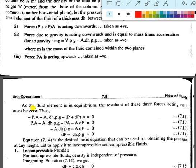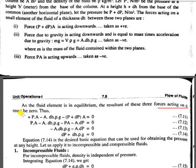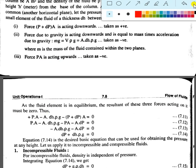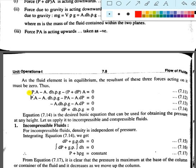As per the fluid element in equilibrium, the resultant of these three forces must equal zero. So: PA minus A·dH·rho·g minus (P plus dP)·A equals zero. Simplifying: PA minus A·dH·rho·g minus PA minus A·dP equals zero, which gives dP plus dH·rho·g equals zero.